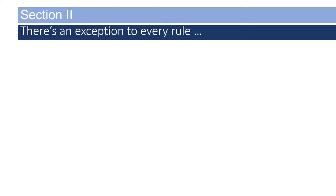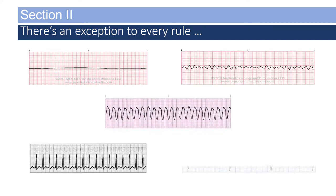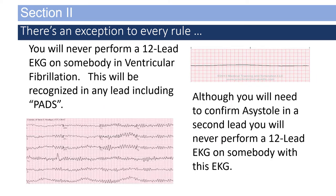There are exceptions to the immediate application of a 12-lead EKG. You should never perform a 12-lead EKG on somebody in ventricular fibrillation — this will be recognized in any lead, including pads. The same is true with asystole, although you may need to confirm asystole in a second lead. These two rhythms require immediate resuscitative action, including high-quality CPR and defibrillation for ventricular fibrillation. You should not be wasting time getting a 12-lead EKG.